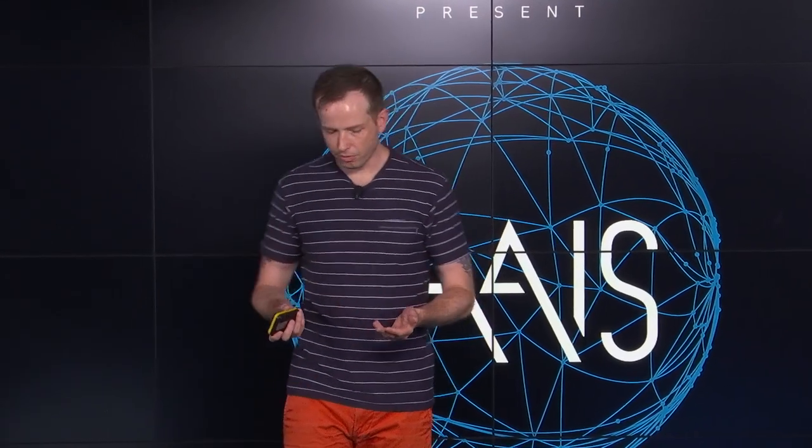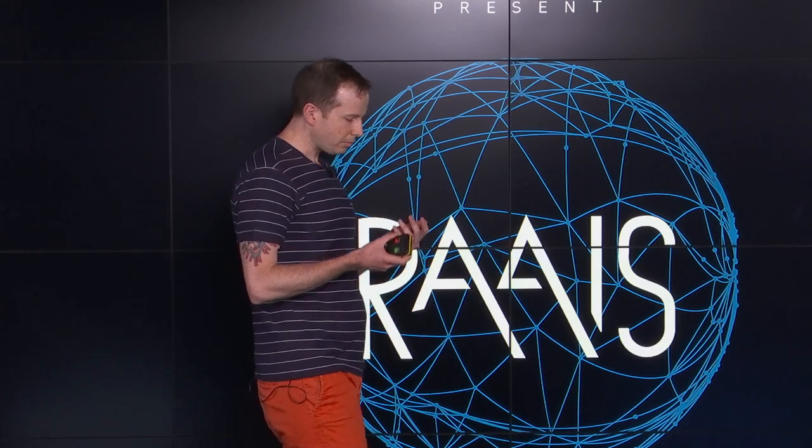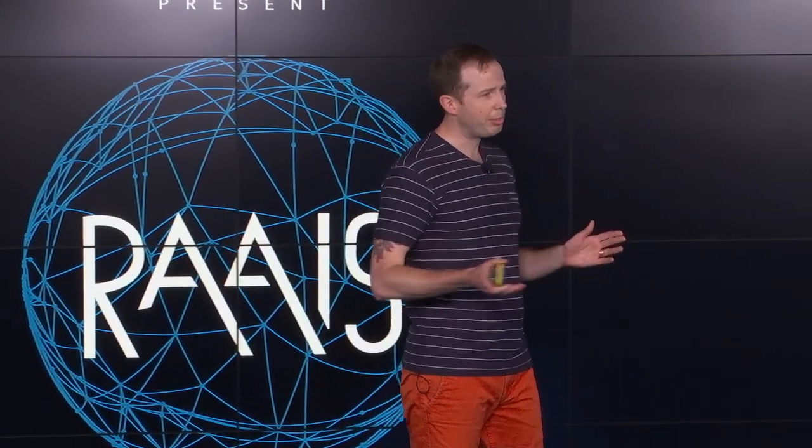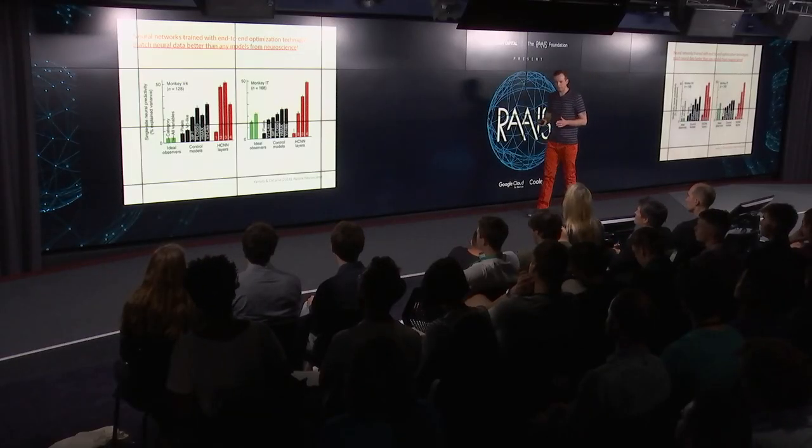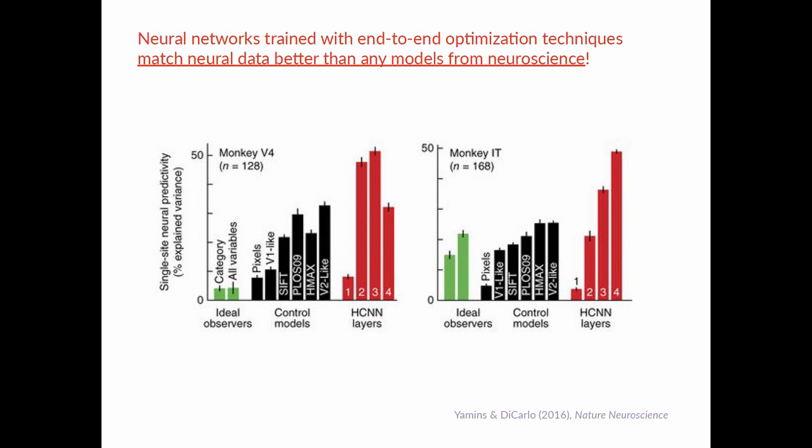Now, why do I think that? Well, there's actually some evidence for this in neuroscience. One of the things that's come out of a series of papers from a variety of labs in neuroscience recently is that neural networks trained with end-to-end optimization techniques match neural data recorded from primates and humans and rodents better than any of the models we have in neuroscience to date, which should certainly give us pause. So what you're looking at here is a plot of the variance explained in recordings from monkeys' brains. There's two regions we're looking at: V4, which is a kind of midpoint in the visual processing pathway for monkeys, and IT, which is a very higher-order region where object categorization occurs.